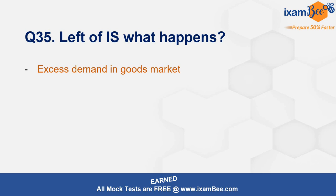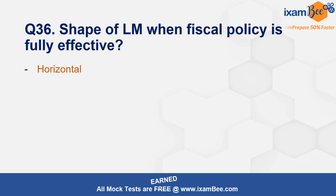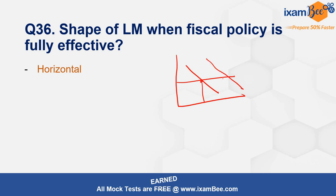Towards the left of the IS curve there is excess demand in the goods market, because investment demand is greater than savings at any given point there. Then there was a question on what happens to the shape of the LM curve when fiscal policy is fully effective — the LM curve must be horizontal. With a horizontal LM curve, an expansionary fiscal policy shifts the IS curve right, leading to a complete increase in equilibrium output.